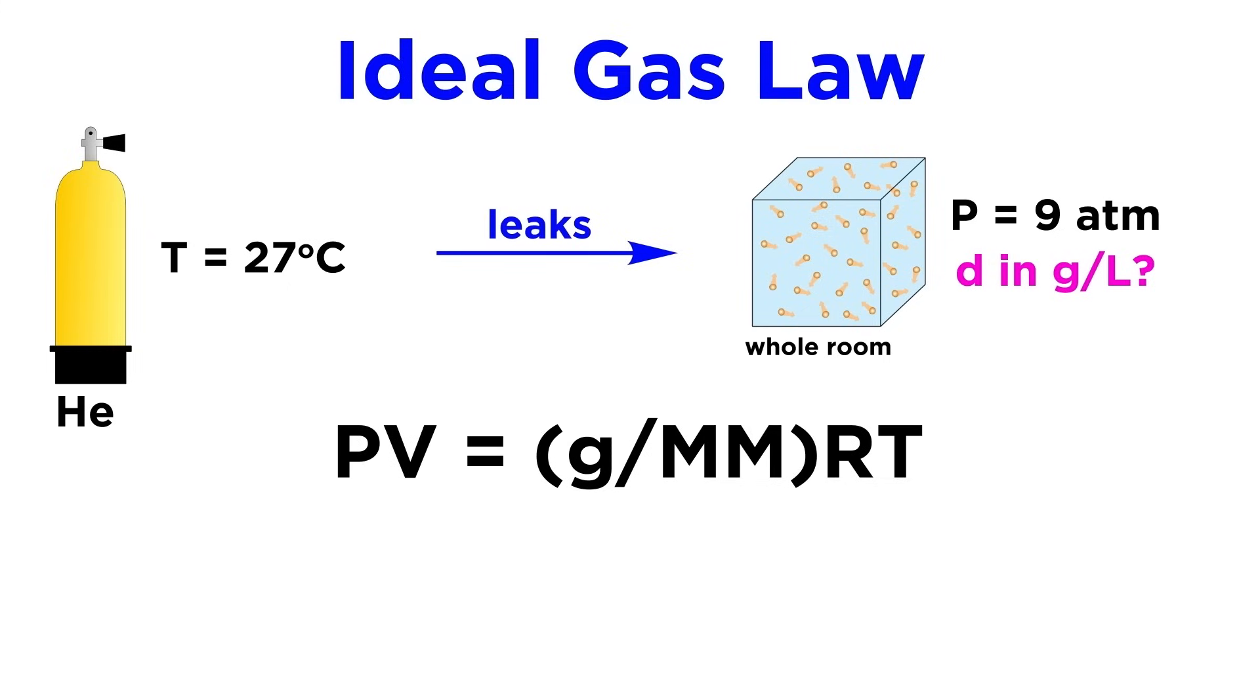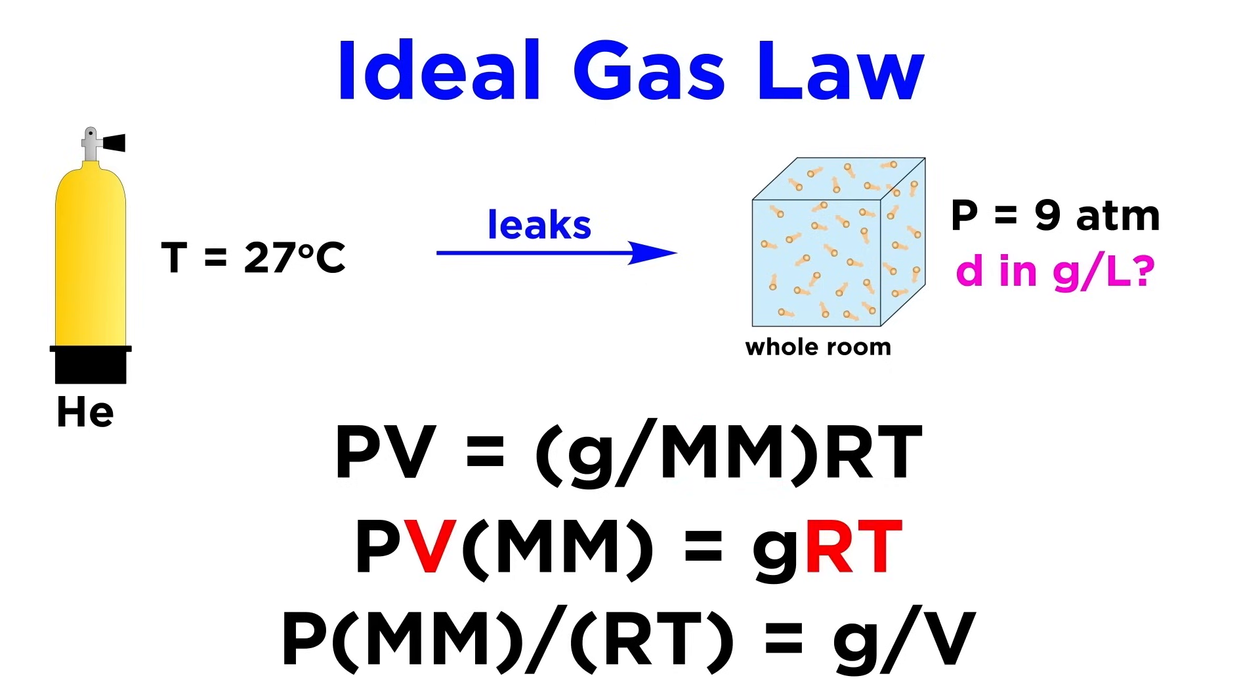Now we want density, which is mass per unit volume, and we now have both mass and volume in this equation, so let's rearrange it further until we get mass over volume on one side, so that we can solve for it. That will entail multiplying both sides by molar mass, and dividing both sides by volume, temperature, and the gas constant.